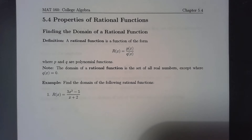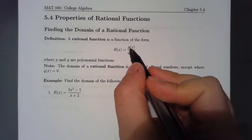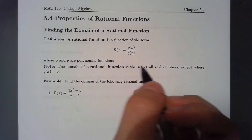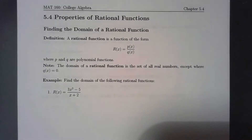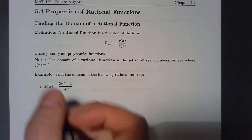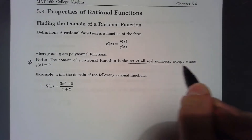We're going to look at rational functions in a little more detail. By definition, a rational function takes the form of a polynomial divided by a polynomial — p(x) and q(x) are polynomial functions. So a rational function is nothing more than a polynomial divided by a polynomial, and that concept should be pretty familiar.